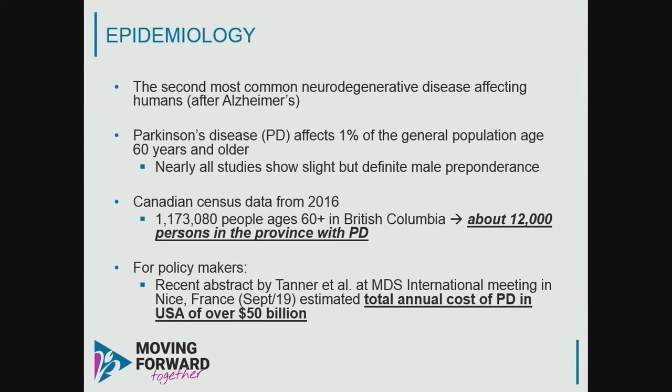Parkinson's has a ripple effect — it affects not just the individual but their family, friends, and co-workers. A recent meeting in Nice, France featured well-known neuroepidemiologist Carly Tanner reporting late-breaking data on annual costs — about 2.5 billion in direct costs and 2.5 billion indirect. This was a U.S. study, so the total is over 50 billion there, and they suspect that's probably an underestimate. It's a very significant monetary issue.